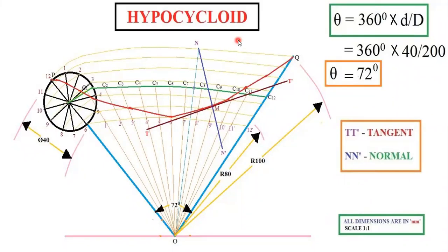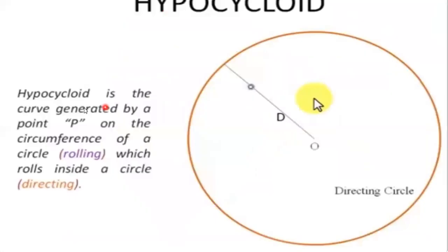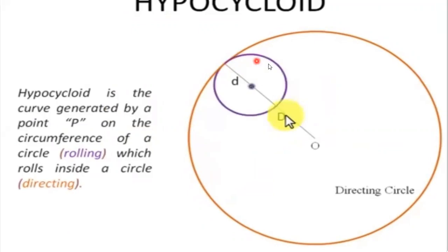The application of hypocycloid can be seen in many places. For example, in a Tamil movie Mumbai Express, a character drives a bike inside a well. The well is the bigger diameter and the two-wheeler wheel is the smaller diameter. When a small diameter circle rolls inside a bigger diameter circle, we call it a hypocycloid, and the curve is just an inverse of the epicycloid. A bigger circle is called a directing circle, and the smaller circle is called a rolling circle.